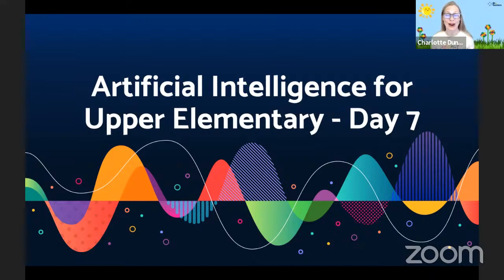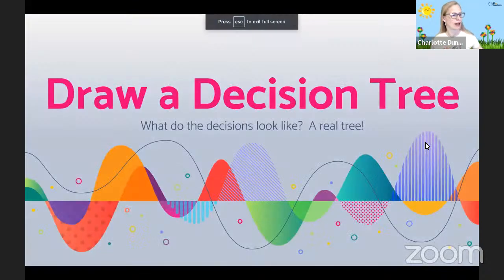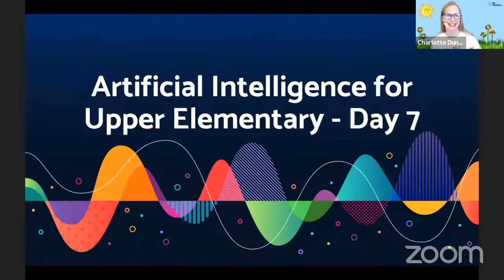Hello, and welcome to Artificial Intelligence for Upper Elementary. This is Day 7. If you haven't participated in the previous days, that's fine — you're welcome to start right here. This is a Code 5 course by me, Charlotte Dungan. I am the AI program architect at the North Carolina School of Science and Math. This program is produced in collaboration with CS's Elementary, AI for Teachers, and sponsored by Infosys Foundation USA.